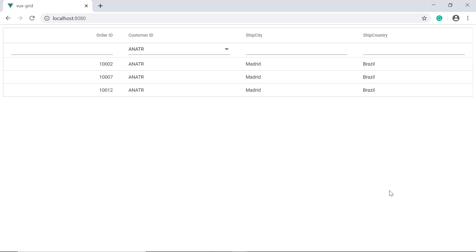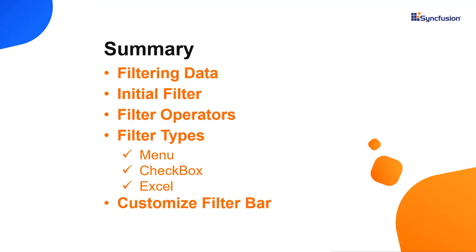Let me make a quick summary of what we have seen so far. I have shown you how to enable a filter bar in Vue DataGrid and filter grid records using the built-in operators. I have also shown you the different filter types in Vue DataGrid and how to add custom components to the filter bar. You can check our user guide documentation link provided in the description section to learn more about filtering in Syncfusion Vue DataGrid. Post your comments below if you need additional information about any grid topics. Thank you for watching this video. If you found this video useful, give it a like and subscribe to our channel to watch more videos. Thank you.